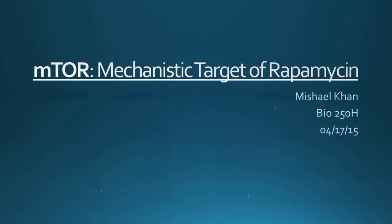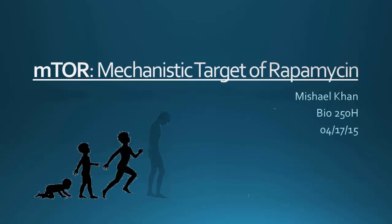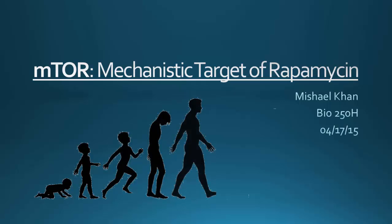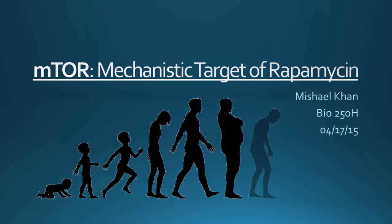Today I will be talking about the protein called the mechanistic target of rapamycin, abbreviated as mTOR. mTOR is a highly conserved serine threonine kinase found in all eukaryotes. It controls cellular growth and has been found to be a major player in cancer and aging processes.